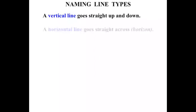In this lesson we do some work on naming line types. A vertical line goes straight up and down. A horizontal line goes straight across, much like the horizon.